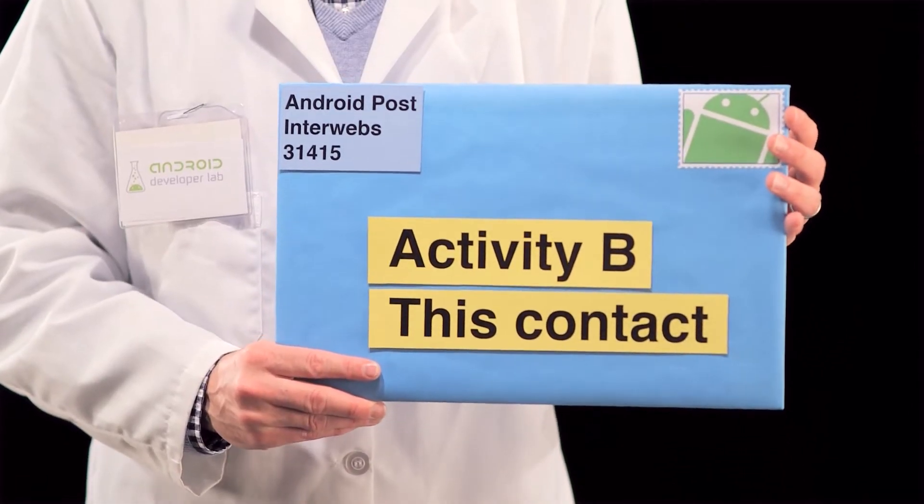Implicit intents are rather more interesting. Here, we don't specify the name of the class — we don't even know what it is. So how do we indicate which activity to launch?